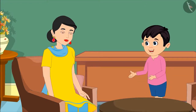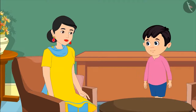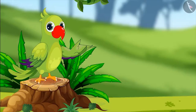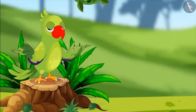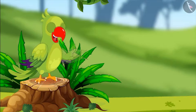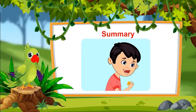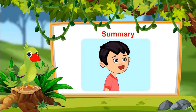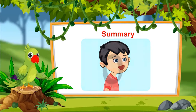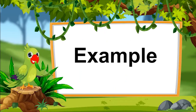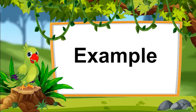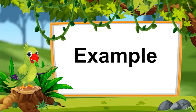So friends, did you enjoy learning about zero? So that was all for today. Let us revise what all we have learned today. When we reduce things till we do not have a single thing left, then we say we have zero things left. In the next video, we will look at some more examples to understand zero better. Till then, goodbye friends.